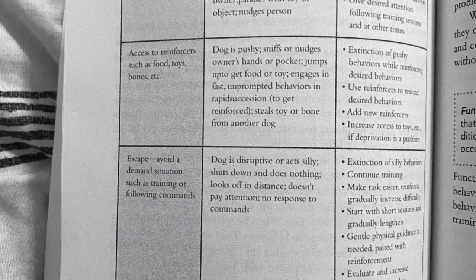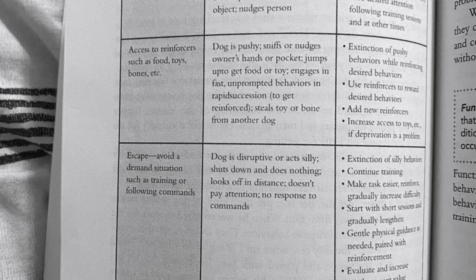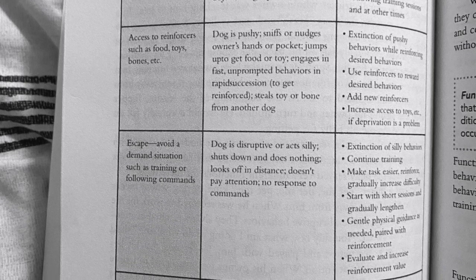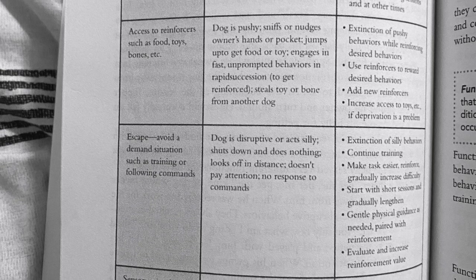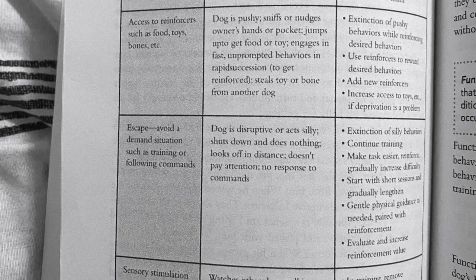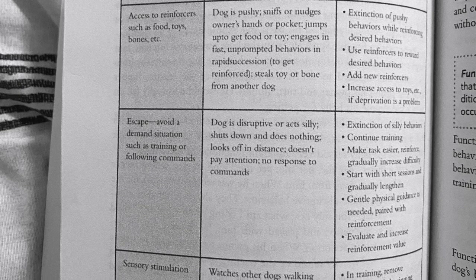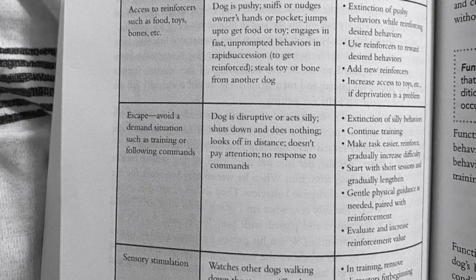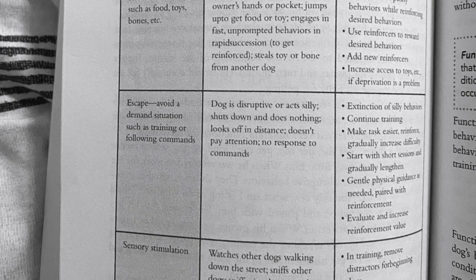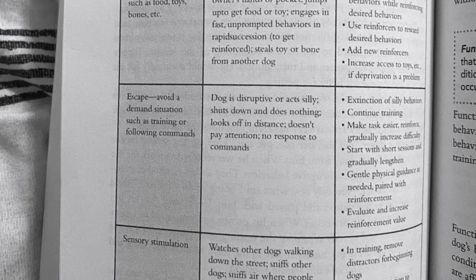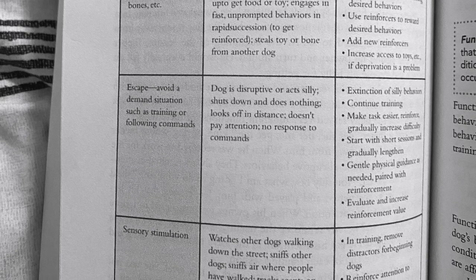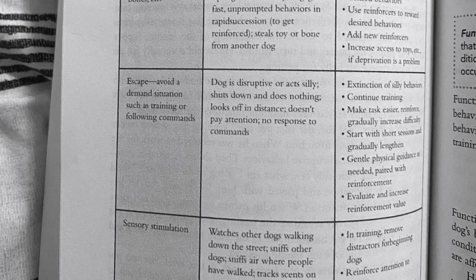Escape — to avoid a demand situation such as training or following commands: dog is disruptive or acts silly, shuts down and does nothing, looks off in the distance, doesn't pay attention, or gives no response to commands. Procedures include extinction of silly behaviors, continue training, make tasks easier, reinforce and gradually increase difficulty, start with short sessions and gradually lengthen, gentle physical guidance paired with reinforcement, and evaluate and increase reinforcement value.